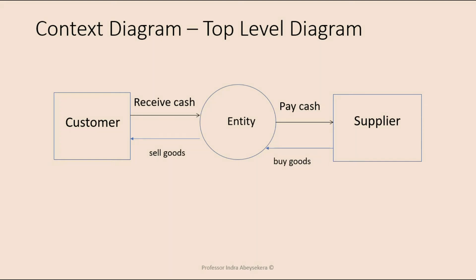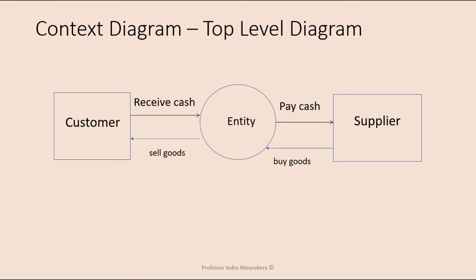In this example, there is an entity and a customer. There is selling goods to the customer and receiving cash. And then there is the information system and the supplier, with buying goods and paying cash.